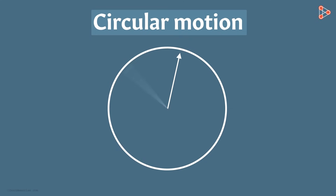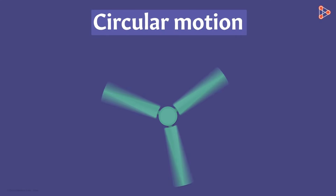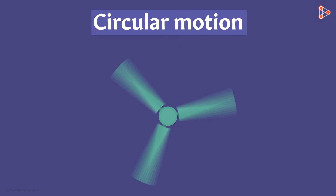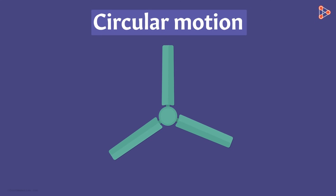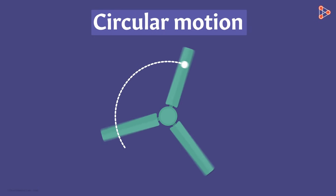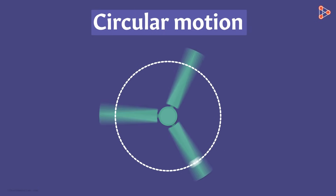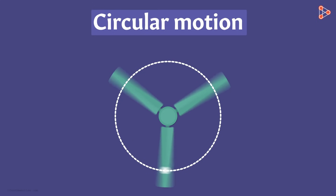Notice that the distance of the stone from your hand is always the same. What about the moving fan — is it also undergoing circular motion? Let's only consider the motion of a point on one of its blades. If we switch on the fan, we will see the point moving in circles. So we can say that the blades of the fan are also undergoing circular motion.